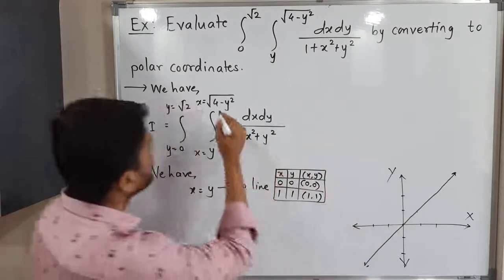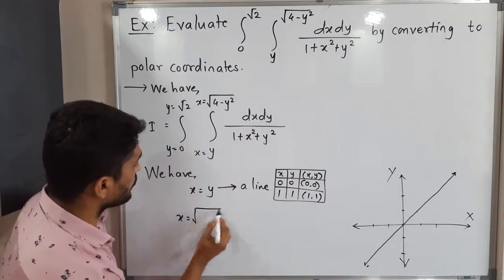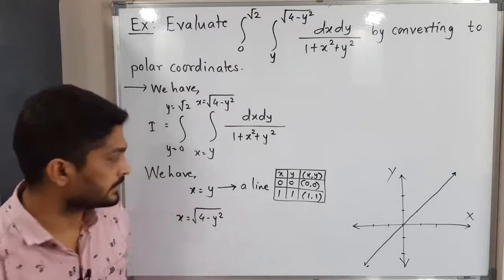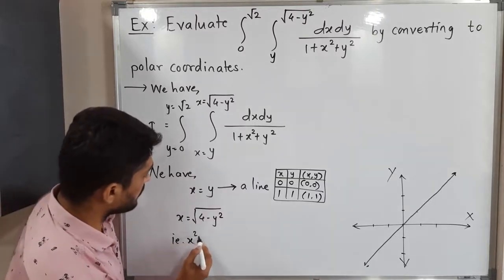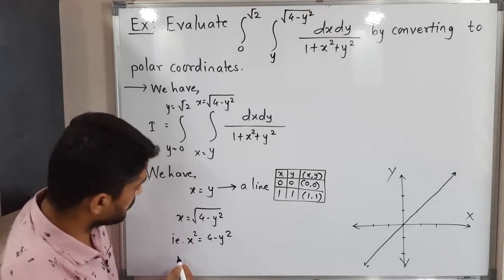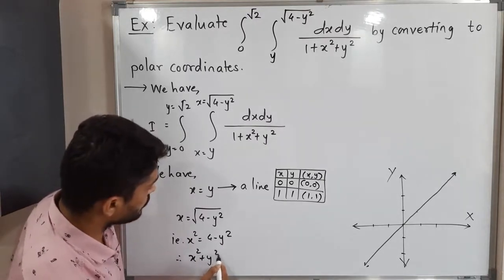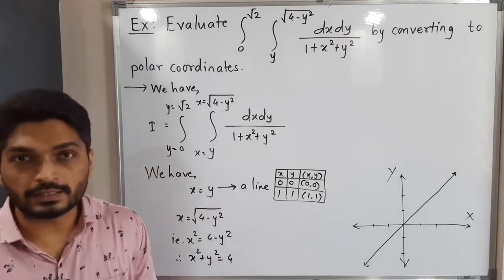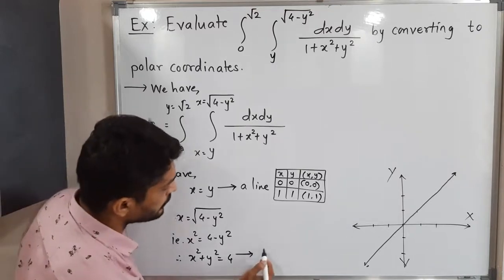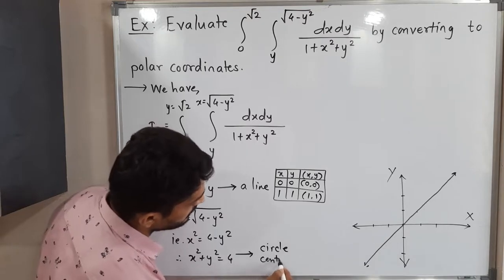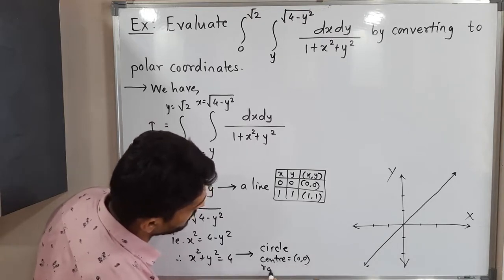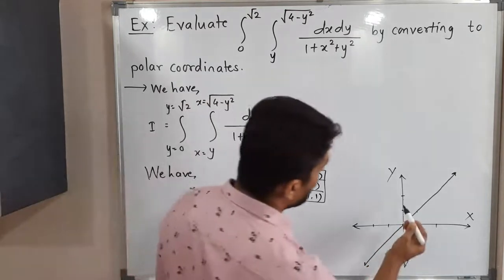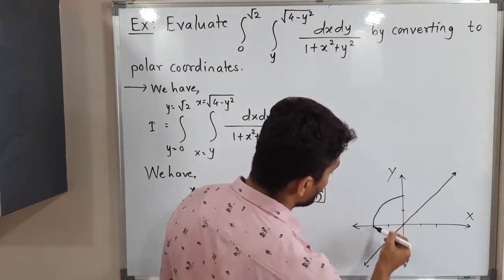The second curve is x equal to square root of 4 minus y squared. To remove the square root, I square both sides: x squared equals 4 minus y squared, so x squared plus y squared equals 4. This is the equation of a circle with center (0, 0) and radius 2, since 4 is the square of 2. Let me draw a rough sketch of this circle.